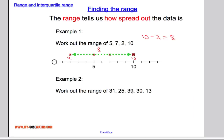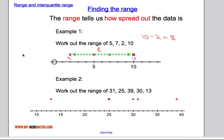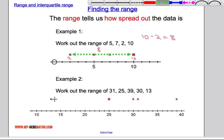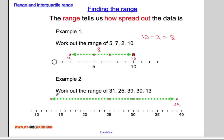Let's have a look at another example. We have a data set here and I'm interested in working out the range. If I show you the data set on a number line, I'm interested in how spread out the data is — what's the space between the biggest value and the smallest value. The biggest value is 39, the smallest value is 13. That means the gap in between is going to be 39 take away 13, which gives us 26. So this data is spread out over 26 spaces.